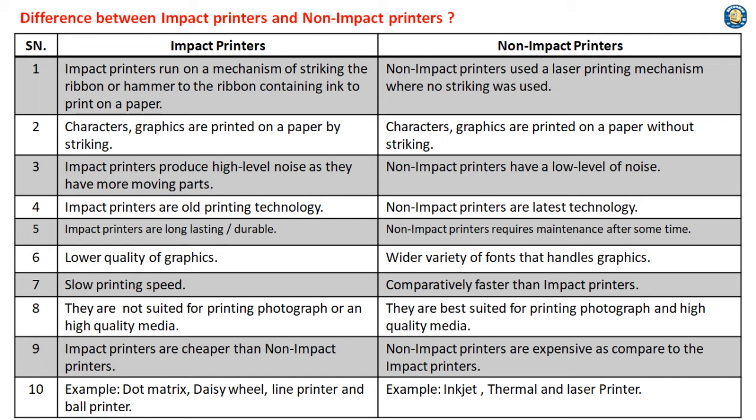Examples of Impact Printers include Dot Matrix, Daisy Wheel, Line Printer, and Ball Printer. Examples of Non-Impact Printers include Inkjet, Thermal, and Laser Printers.